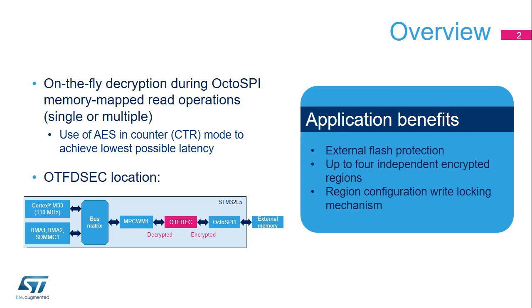As a consequence, each time the content of one encrypted region is changed, the entire region must be re-encrypted with a different cryptographic context — key or initialization vector. Up to four independent regions can be defined, each with their own 128-bit key and initialization vector information. A write-locking mechanism prevents any further reconfiguration of region parameters.